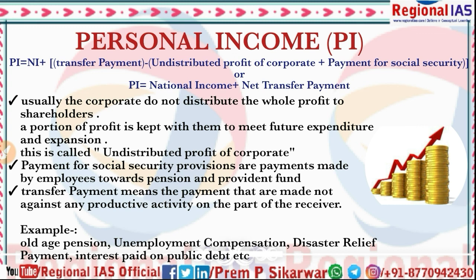So the formula for personal income is: PI = national income + transfer payments (old age pension, unemployment compensation, disaster relief, interest, etc.) − undistributed profit of corporate + payment for social security. That is the final formula for personal income.